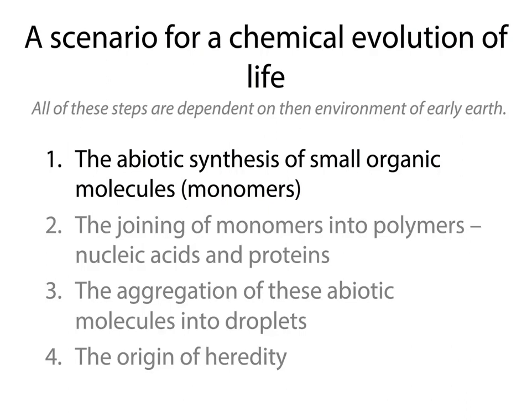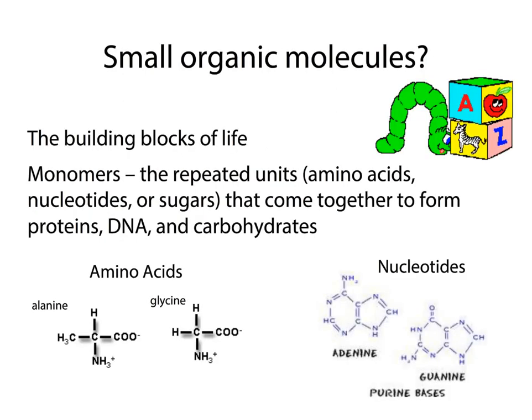Now let's get into how chemical evolution of life actually happens. The first thing you have to have are monomers — mono means one, so it's the simplest form, like the base pairs of DNA or the amino acids of proteins. What's so important about these is that they're the building blocks of life: amino acids, nucleotides, sugars, and all sorts of other good stuff. Scientists wanted to know: if you have all the components of early Earth, would the monomers actually form?